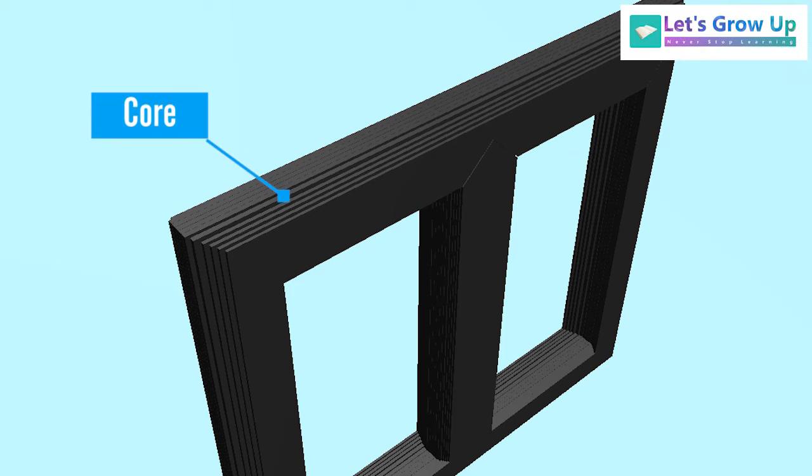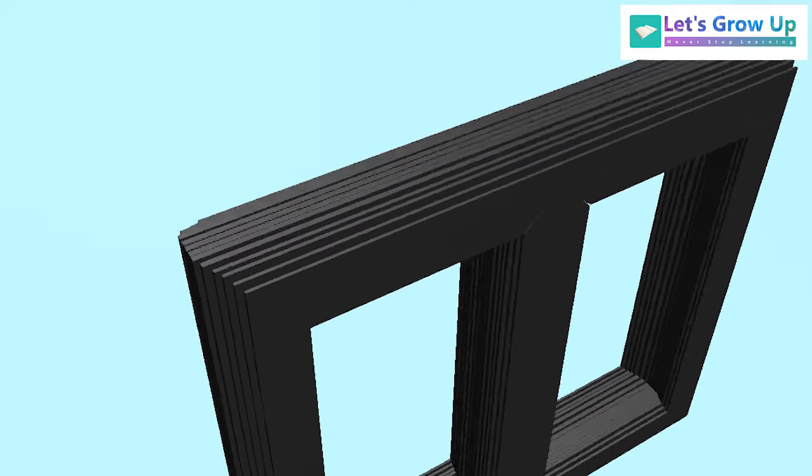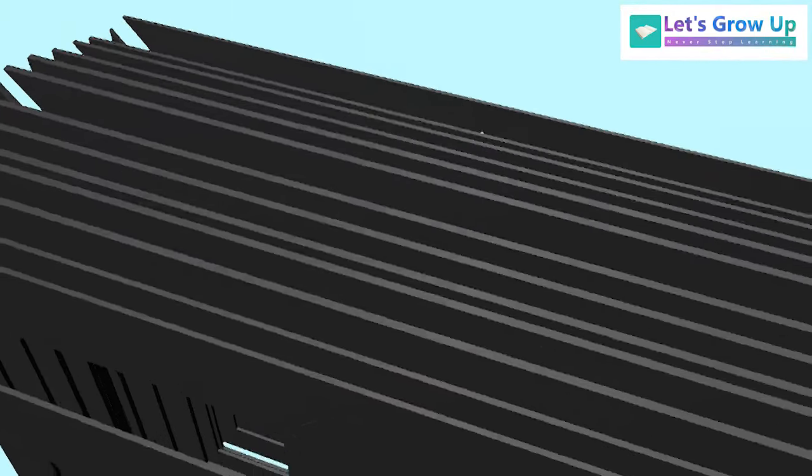Core: It is made up of soft iron or silicon steel materials. The iron core is made of thin metal strips and insulated from each other by insulating varnish coating.